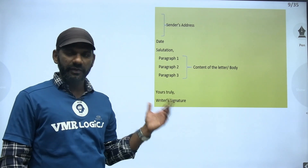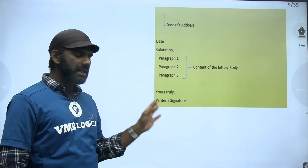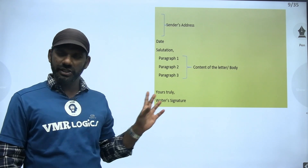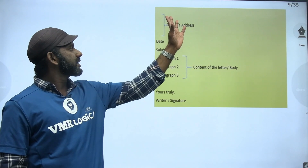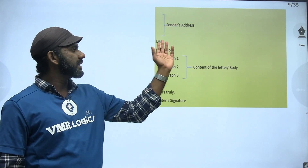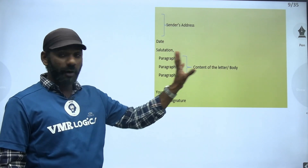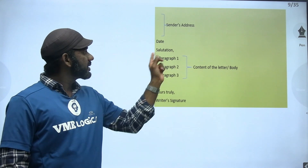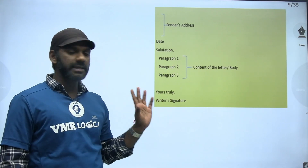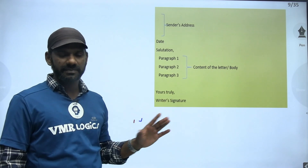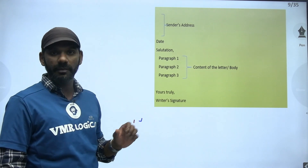Then: yours truly, yours lovingly, yours faithfully, or sincerely — it doesn't matter — comma, then the writer's name (the signature). So the full format for an informal letter is: sender's address, date, salutation, the body (3 paragraphs), then yours truly comma, writer's name. We'll follow this pattern in the case of an informal letter.